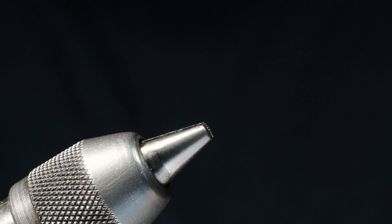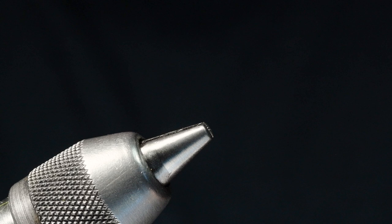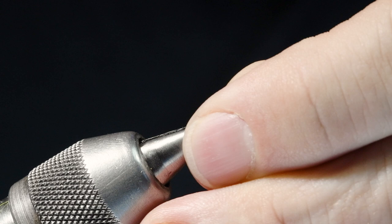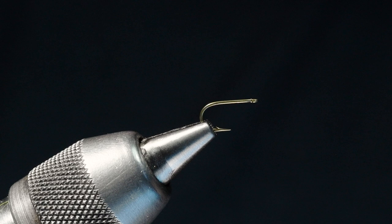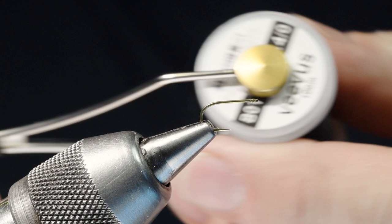So this is a damsel adult. And I've got this, I'm going to tie this on a size 12 Daiichi 1640, which is a ring eye short shank hook like so. And I'm going to start with some black 14-0 Vivas. So I'm going to start this thread just here behind the eye.